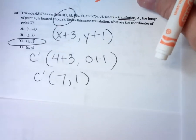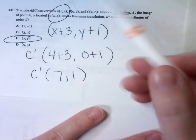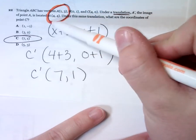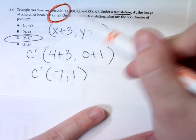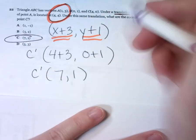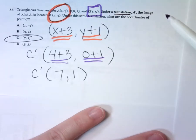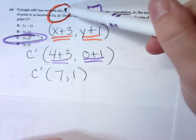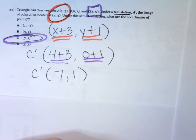Number 22. This is another translation. It wants to know the other coordinates of point C. I focused in on A to see what happened. The x went from 1 to 4, so we added 3. The y coordinate went from 3 to 4, which means it went up by 1. So I knew my x needed to go up by 3 and my y needed to go up by 1. I did the same thing to point C, and that gave me answer choice C, 7, 1.